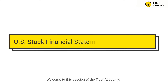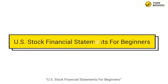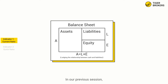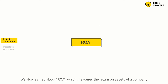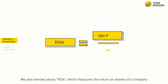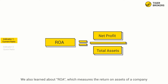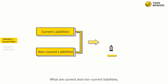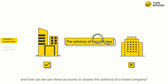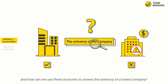Hi everyone, welcome to this session of the Tiger Academy: U.S. Stock Financial Statements for Beginners. In our previous session, we covered the asset side of the balance sheet and gained an understanding of current and non-current assets. We also learned about ROA, which measures the returns on assets of a company. In order to avoid investing in companies with liquidity risks, we're going to learn about the liability side of the balance sheet in this session — specifically, what are current and non-current liabilities, and how can we use these accounts to assess the solvency of a listed company?